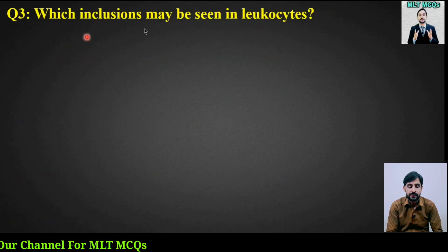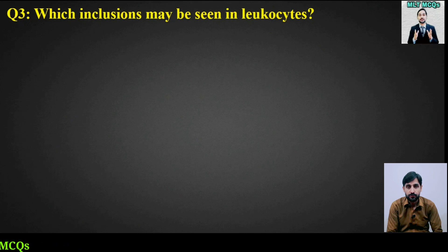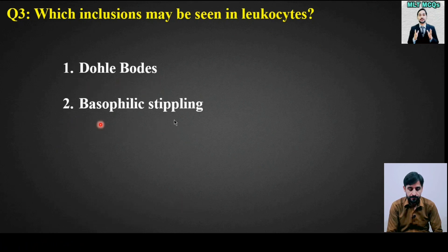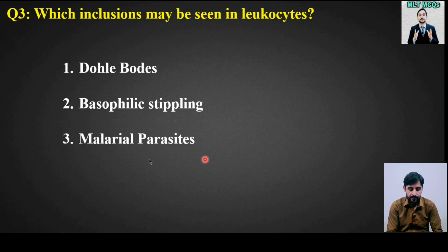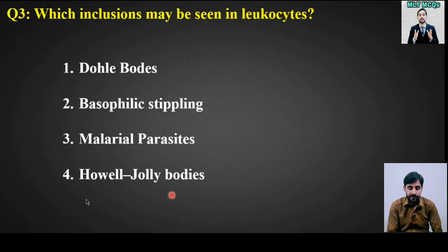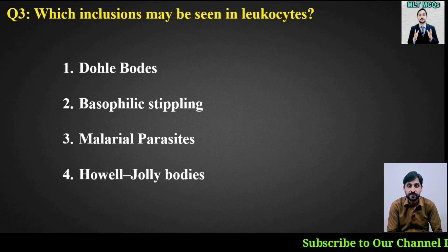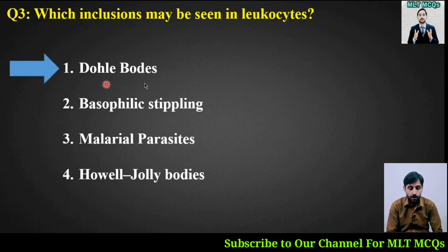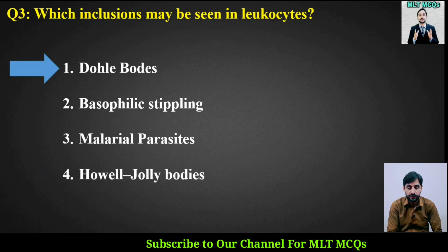MCQ number 3: Which inclusions may be seen in leukocytes? Options are: Döhle bodies, basophilic stippling, malarial parasites, or Howell-Jolly bodies. The right answer is option number 1, Döhle bodies.